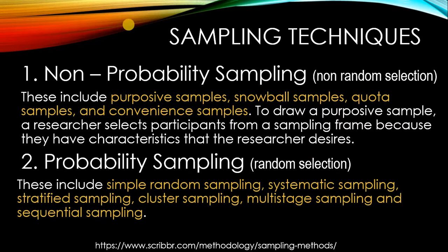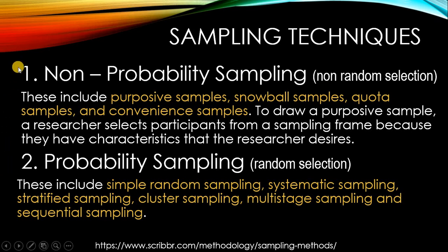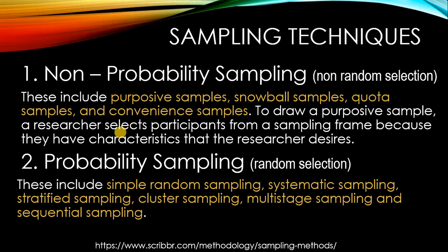Before collecting data, you need to determine your samples. There are two methods for sampling techniques: non-probability sampling and probability sampling. For non-probability sampling, you don't need to use random selection — this may include purposive samples, snowball samples, quota samples, and convenience samples. Purposive sampling is where a researcher selects participants from a sampling frame because they have characteristics the researcher desires. For probability sampling, this includes simple random sampling, systematic sampling, stratified sampling, cluster sampling, multistage, and sequential.